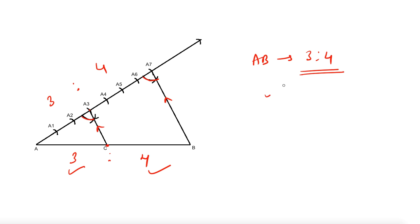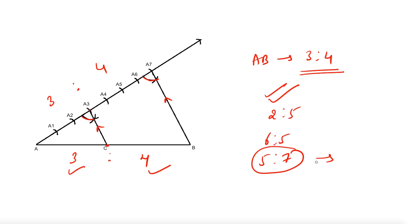Hence our line AB is divided in ratio 3:4 and the division of line segment is complete. You can apply this for any ratio — 2:5, 6:5, 5:7 — just add them up. For example, 5:7 gives 12 parts; divide AX into 12, join the 12th to B, draw a parallel from the 5th division. Constructions is very scoring — once you know the procedure you can easily score a lot of marks. Thanks for watching!